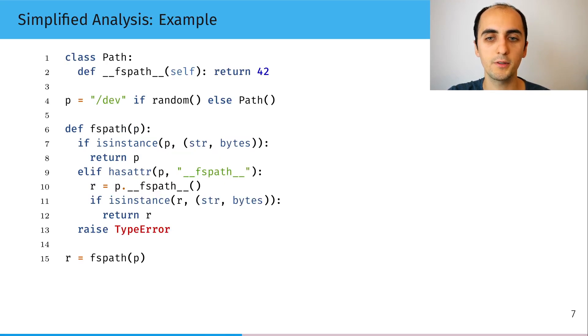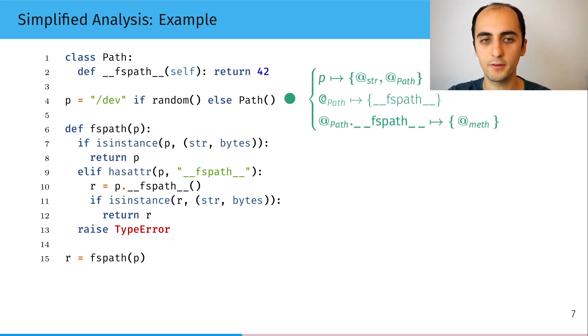So here is a sketch of how the analysis works. We're back to the fspath function from the beginning and we analyze the program by induction of the syntax from top to bottom. So first, p will either point to a string or a path instance.